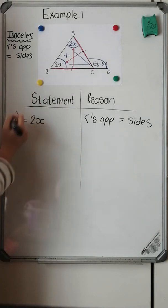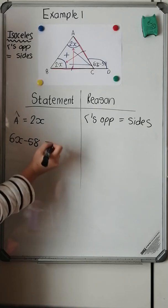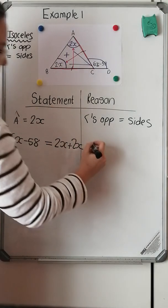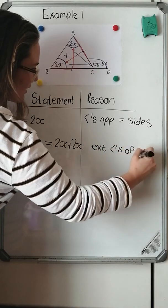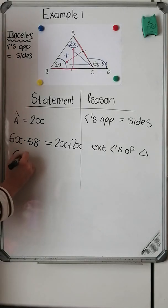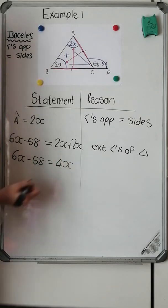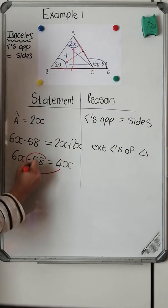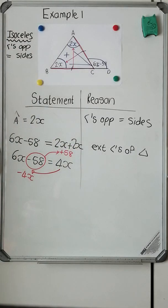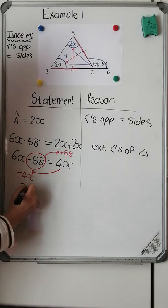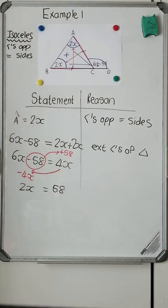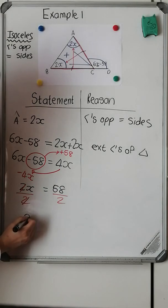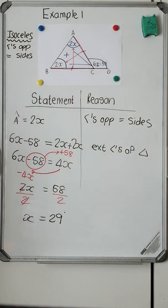Let's write that as an equation. The outside angle, which is 6x minus 58, is equal to the sum of the two interior opposite angles. My reason is exterior angles of a triangle. Solving for x: 6x minus 58 equals 4x. I take 4x over — it becomes negative 4x — and the negative 58 over becomes positive 58. So 6x minus 4x gives 2x equals 58. Dividing both sides by 2, x is equal to 29 degrees.